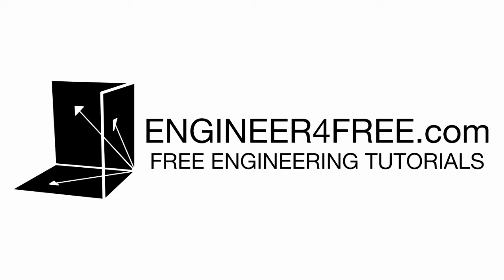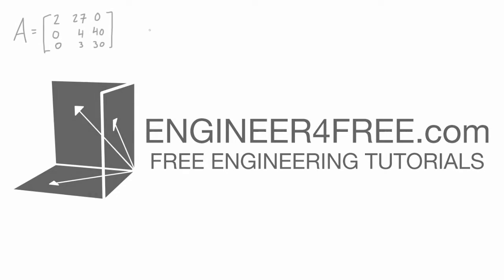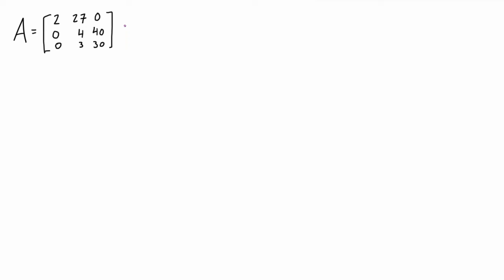Welcome back. In this video I'm going through an example on how to find the eigenvalues and eigenvectors of a 3×3 matrix. Given that it's a 3×3 matrix, that means there will be exactly three eigenvalues, and then we can find an eigenvector that corresponds to each of those.